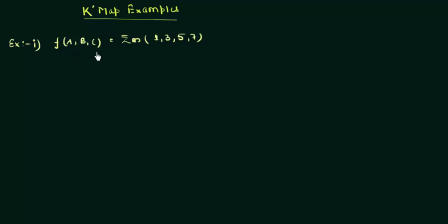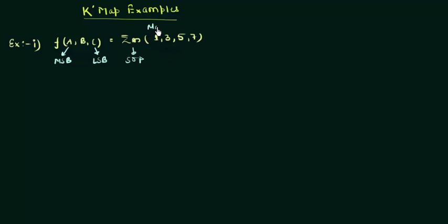This F represents your function, and A, B, C represents your variables. Remember that the order is very important: A written first means A is your MSB, the most significant bit, and C written last means C is your LSB, the least significant bit. The summation of m represents that it is sum of products, and 1, 3, 5, 7 are the minterms M1, M3, M5, and M7 — the true values of this function F. It is essentially a truth table written in short form.